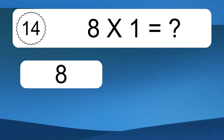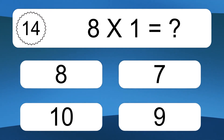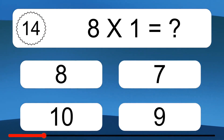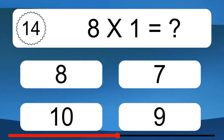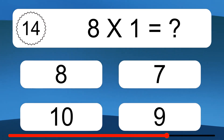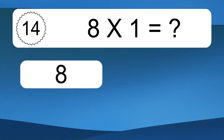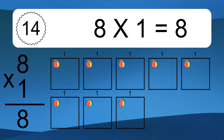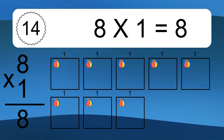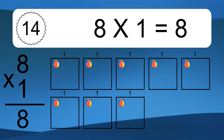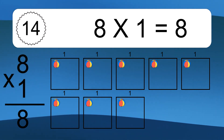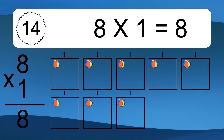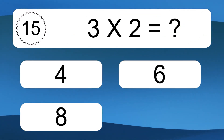8 times 1 equals what? 8 times 1 equals 8. We have 8 boxes, and each box has 1 colorful ball inside. If you count all the balls in all the boxes together, you will have 8 times 1 balls. This equals 8 balls.